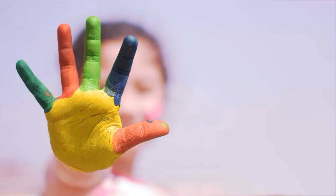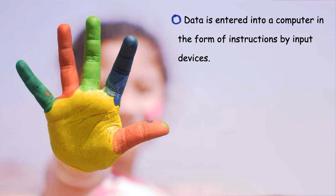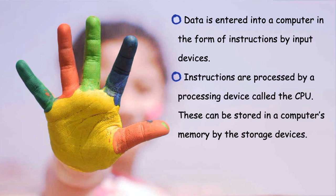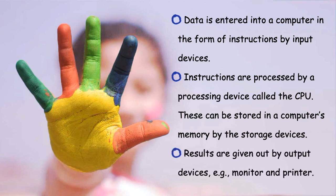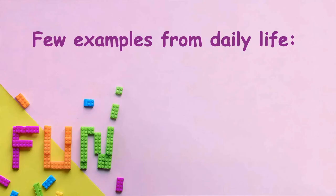Therefore, what we got about this IPO cycle is that data is entered into a computer in the form of instructions by input devices. Instructions are processed by a processing device called the CPU. These can be stored in computer's memory by storage devices. Finally, the results are given out by output devices, example monitor and printer. Let's have a look at a few examples of IPO cycle from daily life.